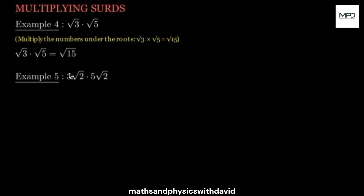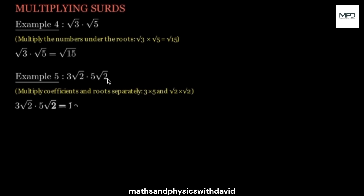In this case, all you have to do is multiply the coefficients at the front first — 3 times 5 is 15 — then square root of 2 times square root of 2, which is square root of 4. And 3 times 5 is 15, square root of 4 is 2. Simply put, if you have square root of 2 times square root of 2, all you need to do is pick what's inside, which is just 2.